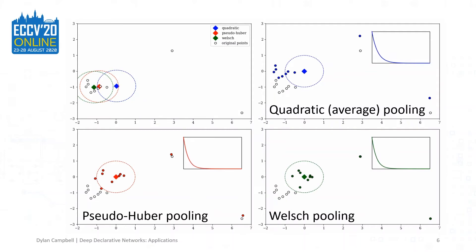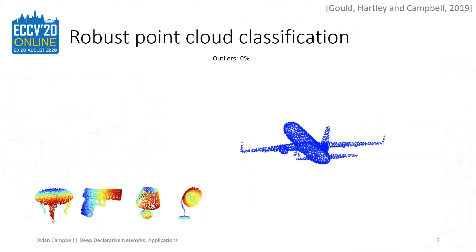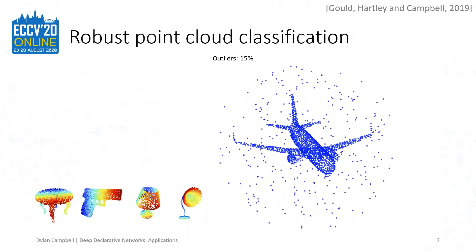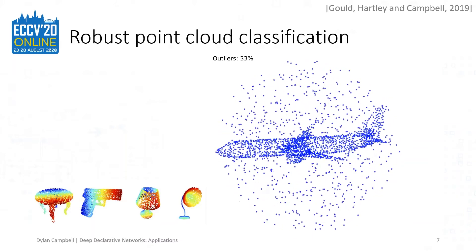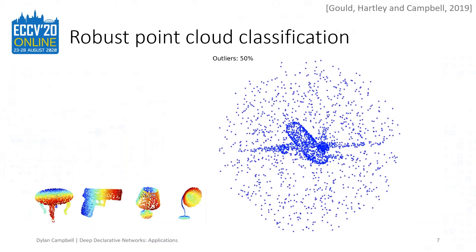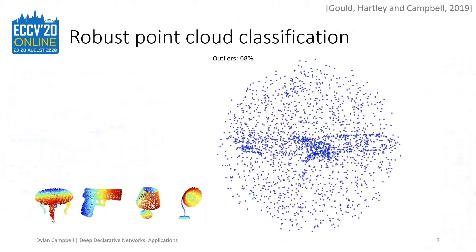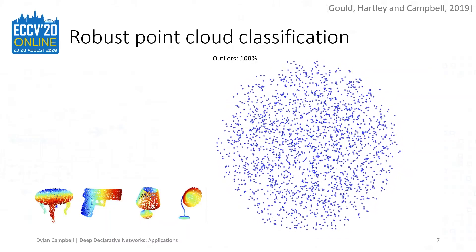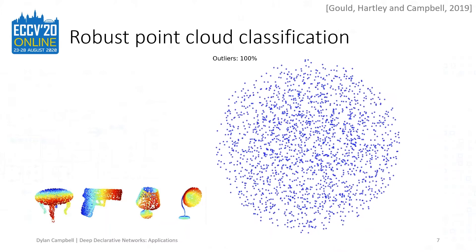In contrast, for average pooling, the outliers have undue effect on all of the features. In this case, outliers may be points from a second distributional model — for example, when you have multiple moving objects in a scene. We've also applied robust pooling to point cloud classification in the presence of outliers — in this case, random outliers. With 50% outliers on the ModelNet40 dataset, PointNet with standard max pooling achieves only 5% top-1 accuracy for classification, whereas truncated quadratic pooling achieves almost 60%, being significantly more robust to outliers.